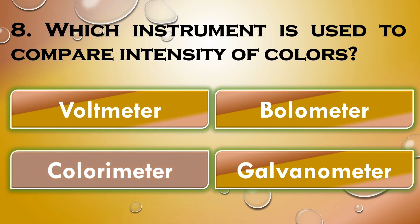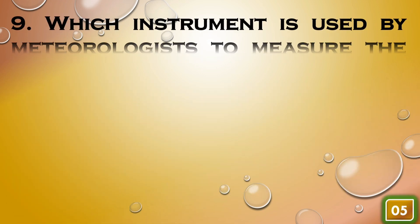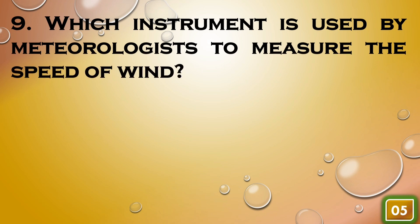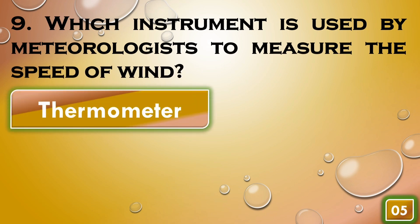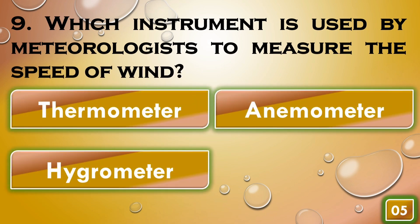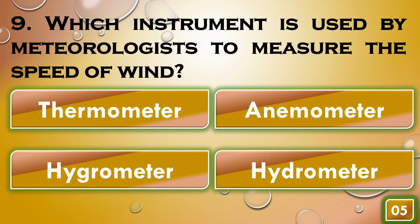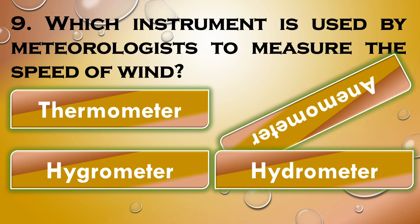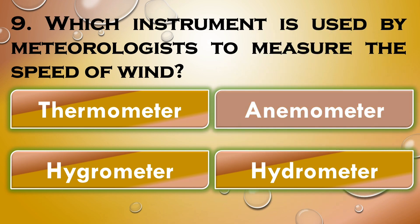Which instrument is used to compare the intensity of colors? Colorimeter. Which instrument is used by meteorologists to measure the speed of wind? Anemometer.